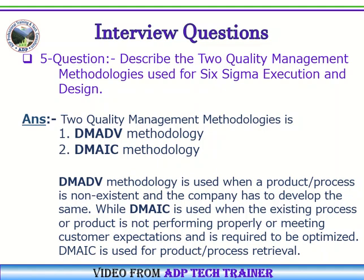DMADV methodology is used when a product or process is non-existent and the company has to develop the same. While DMAIC is used when the existing process or product is not performing properly or meeting customer expectations and is required to be optimized. DMAIC is used for product and process retrieval.